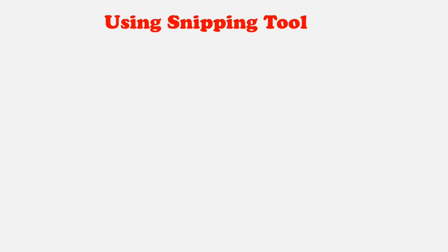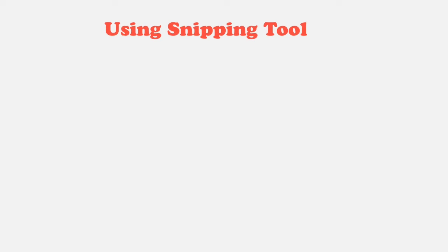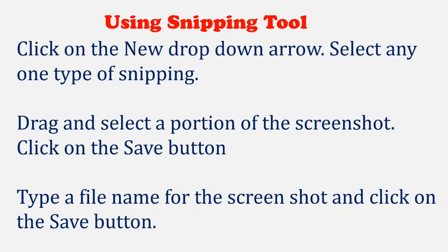Using Snipping Tool: select Snipping Tool from Windows Accessories. There are four types of snips — Free Form Snip, Rectangular Snip, Window Snip, and Full Screen Snip. To use it: click on the New drop-down arrow, select any one of the snip types, drag and select a portion of the screenshot, click the Save button, type a file name for the screenshot, and click Save.